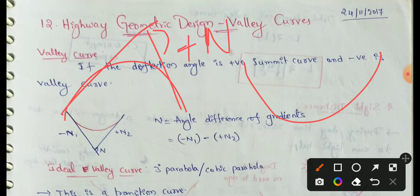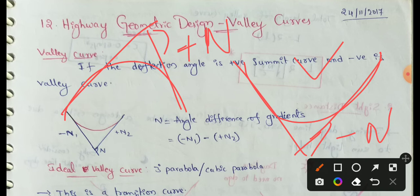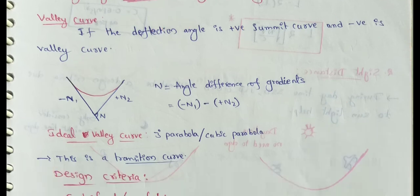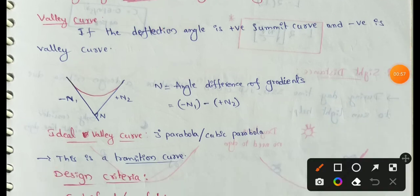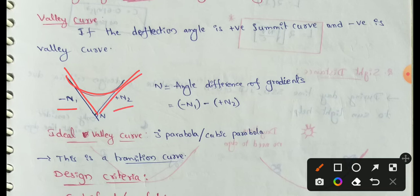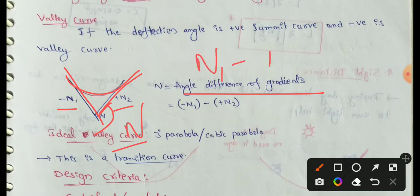In the Summit Curve, the deflection angle is positive, so the n-value is positive. However, in the Valley Curve, the deflection angle is negative. If the first tangent gradient is negative and the second gradient is also negative, the difference is the n-value — that is, the angle difference of gradients. The n-value means n1 minus n2.